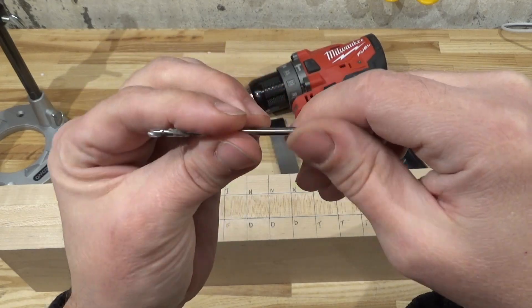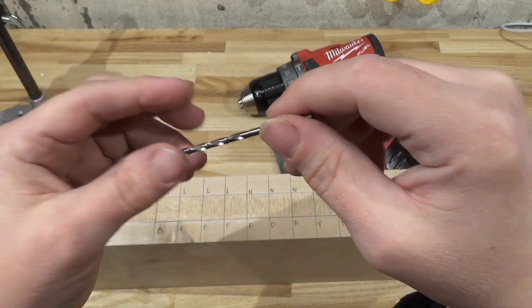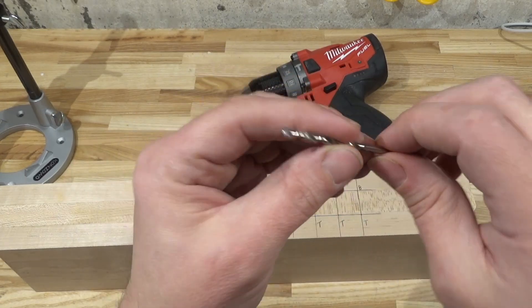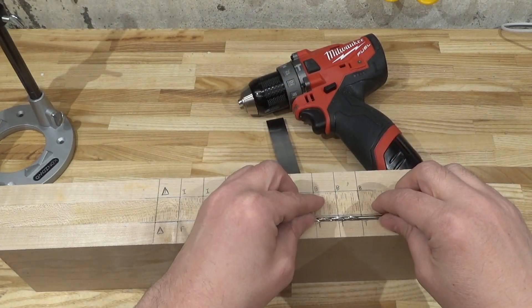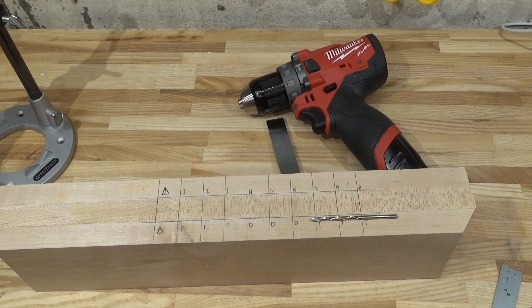This is pretty similar to a standard drill bit that anybody else would be using. For Triumph, I will be using those three holes marked T.